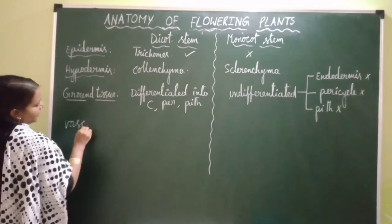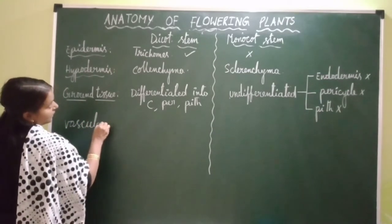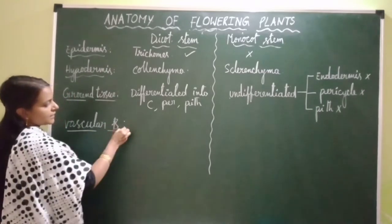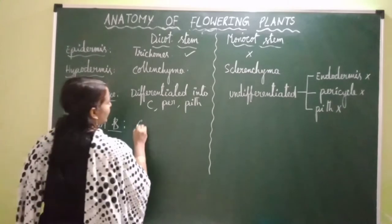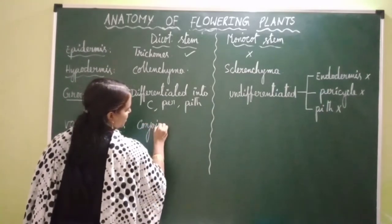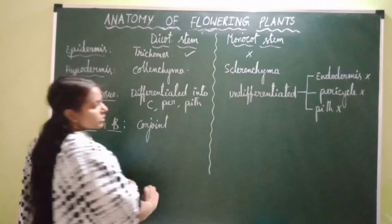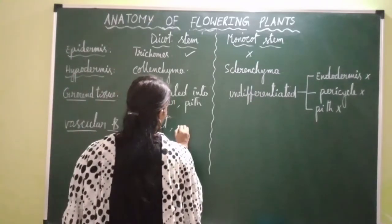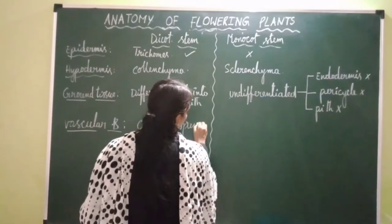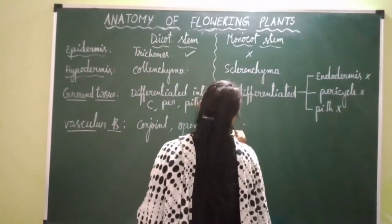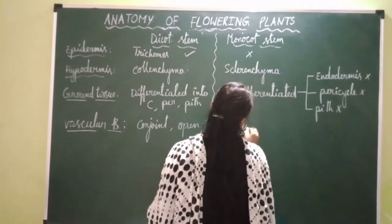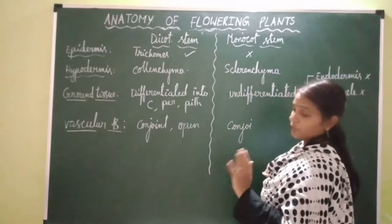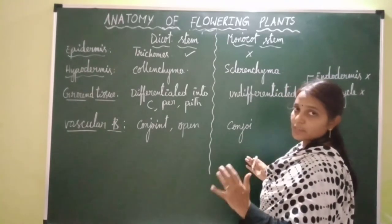Next, coming to vascular bundles. In dicot stem, conjoint open type of vascular bundles are present. In case of monocot stem, conjoint closed type of vascular bundles are present. These are called open type because there is cambium in between phloem and xylem of a vascular bundle, and hence they exhibit secondary growth.